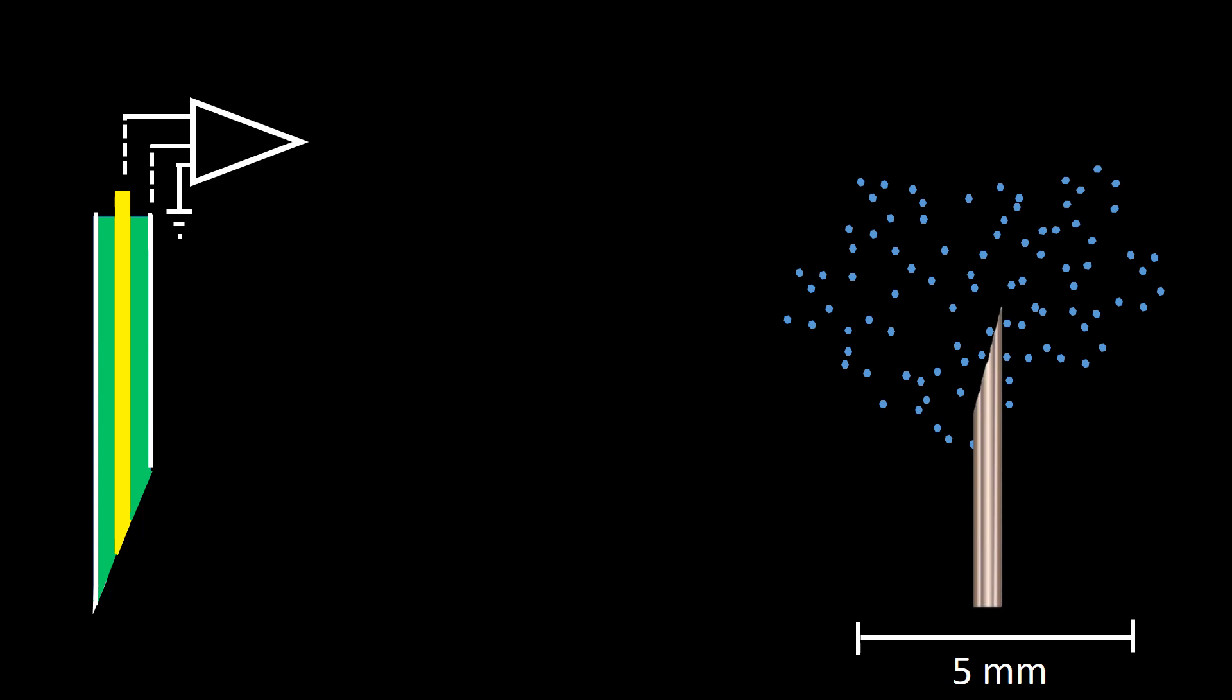A concentric needle is represented here by a relatively thin electrode in yellow separated by insulating material from the shaft that serves as a reference.